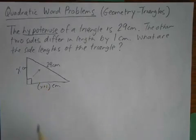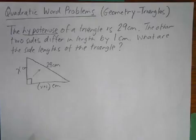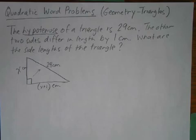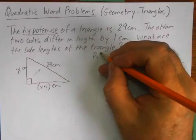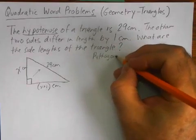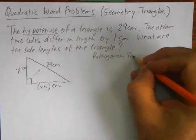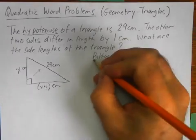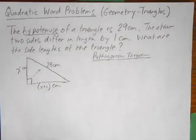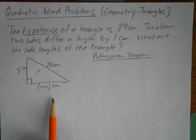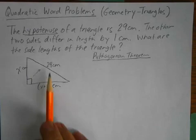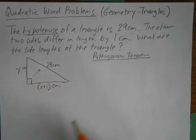So how can we create an equation from this? Well, it's a right triangle. So what do we know about the relationship between the three sides? Well, we have Pythagorean theorem. So from Pythagorean theorem, we know that A squared plus B squared equals C squared and C is always the hypotenuse.